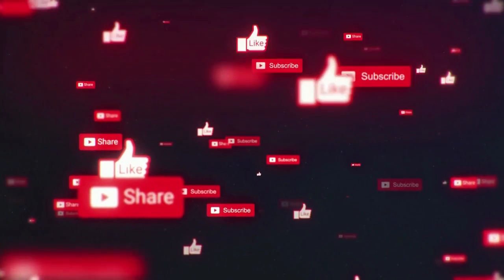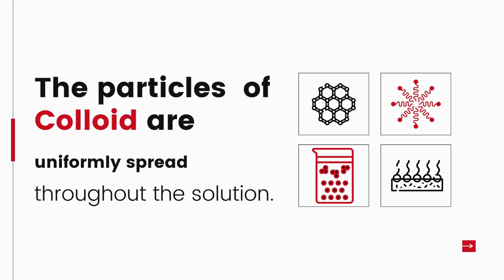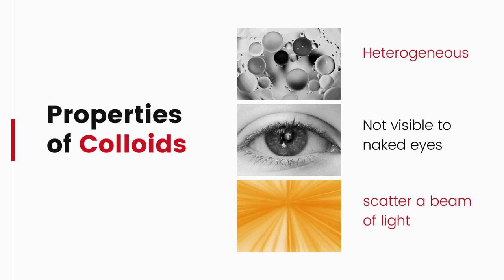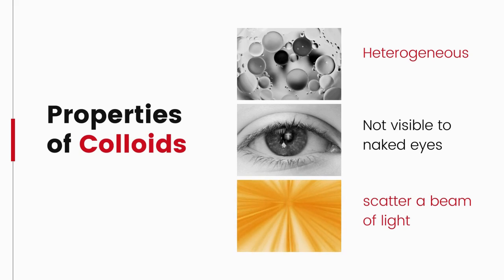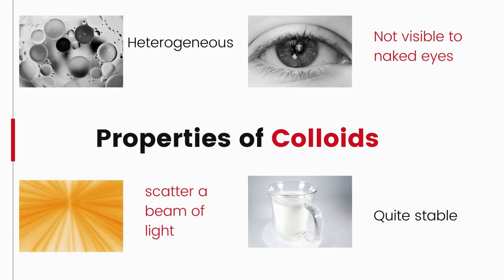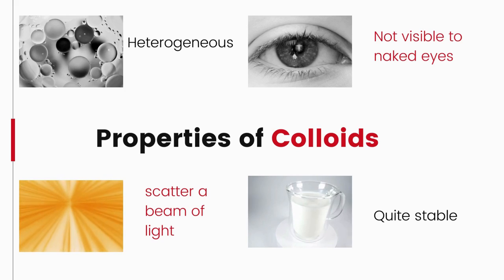The particles of a colloid are uniformly spread throughout the solution. Due to the relatively smaller size of colloidal particles compared to those of a suspension, the mixture appears to be homogeneous — but actually a colloidal solution is a heterogeneous mixture. Because of the small size, we cannot see colloidal particles with naked eyes, but they are big enough to scatter a beam of light passing through and make its path visible. Colloids do not settle down when left undisturbed — a colloid is quite stable — and hence cannot be separated by filtration.